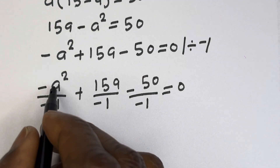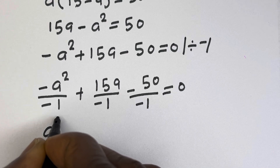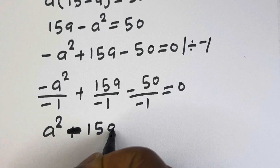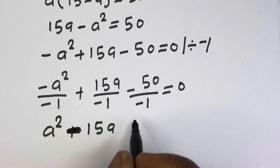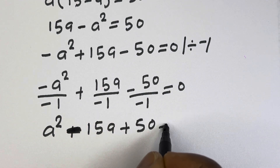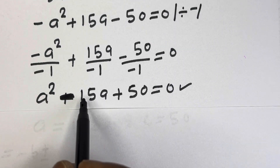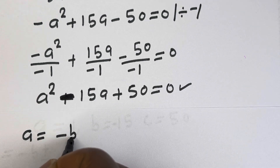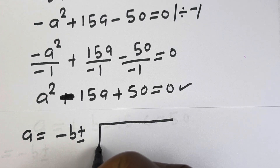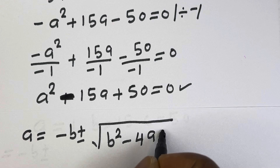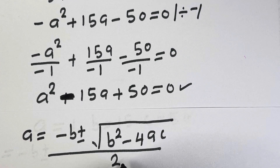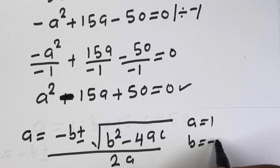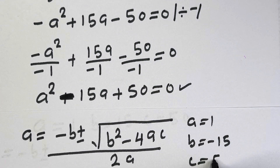This is a quadratic equation. Dividing by minus 1 gives us A squared minus 15A plus 50 equals 0. Using the general quadratic formula: A equals minus B plus or minus square root of B squared minus 4AC, over 2A. From here, A equals 1, B equals minus 15, and C equals 50.